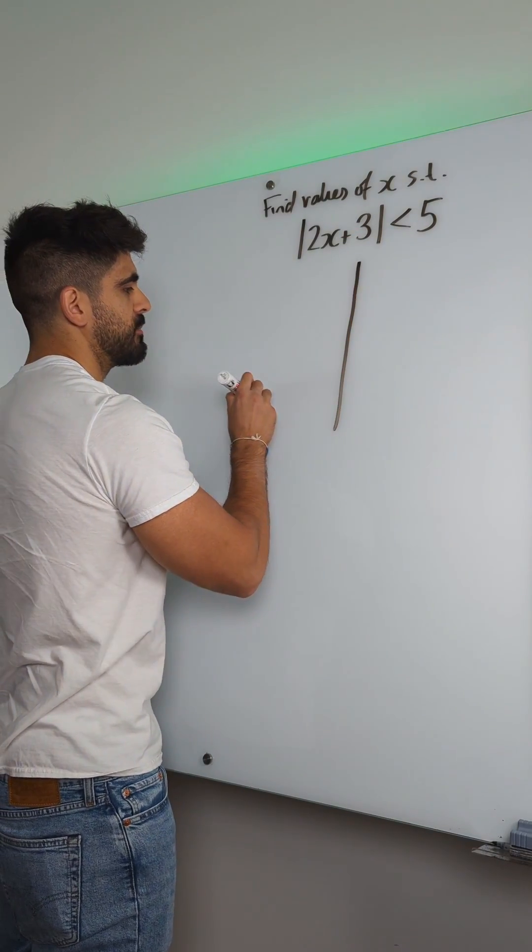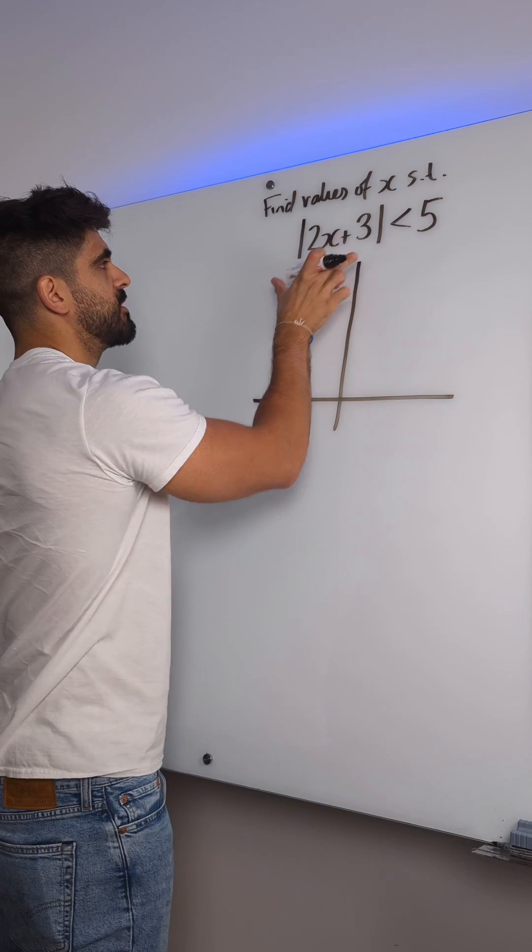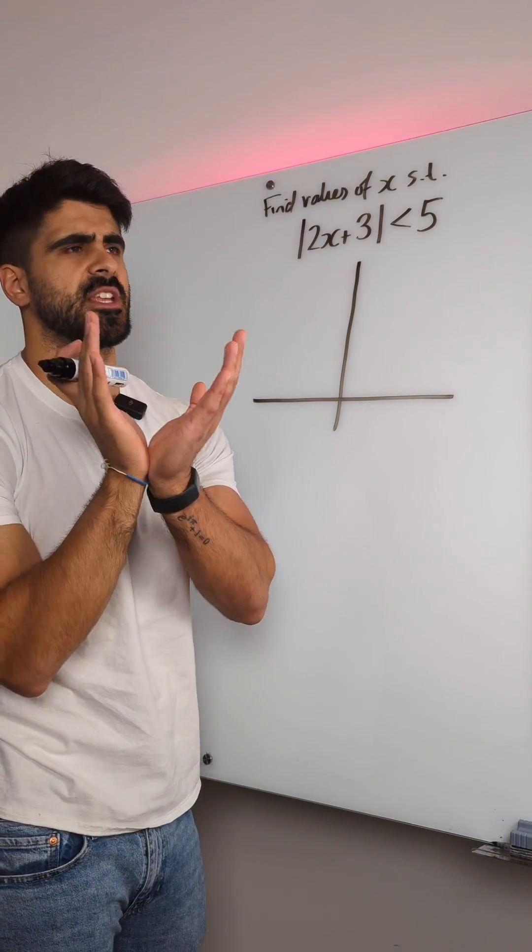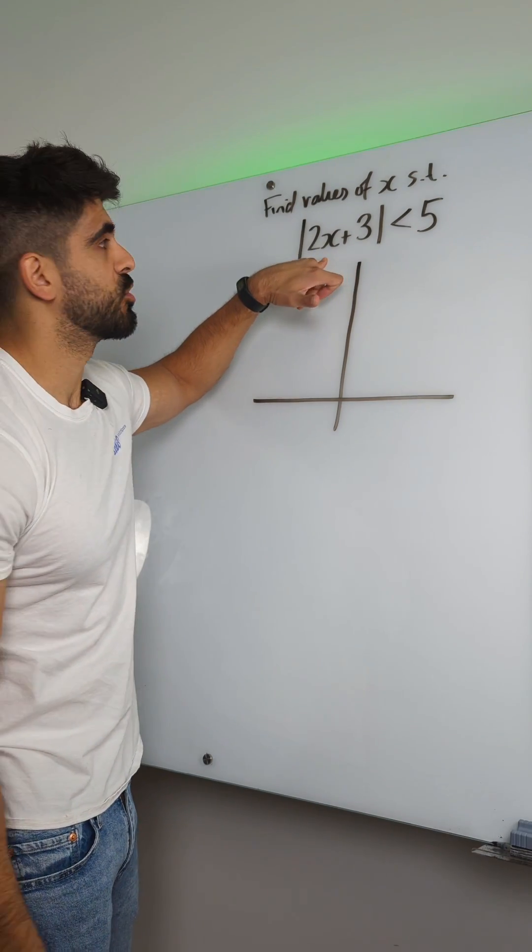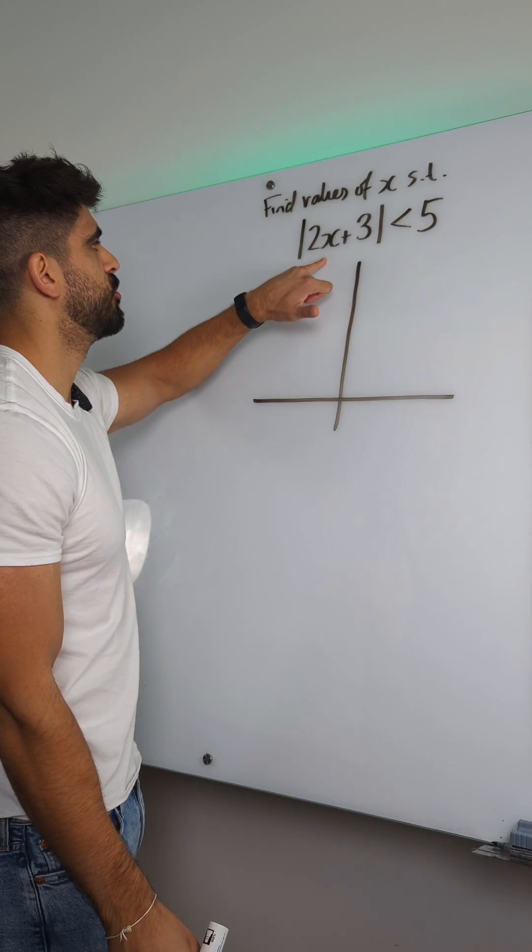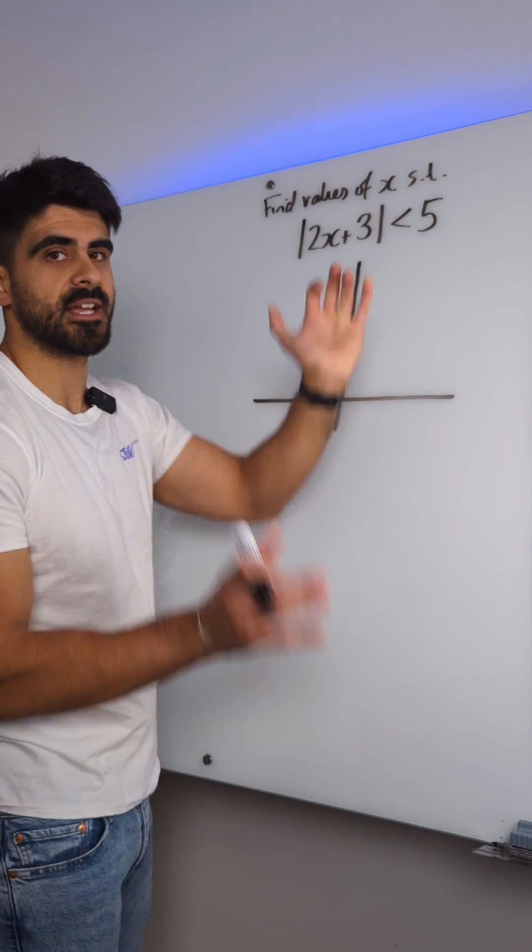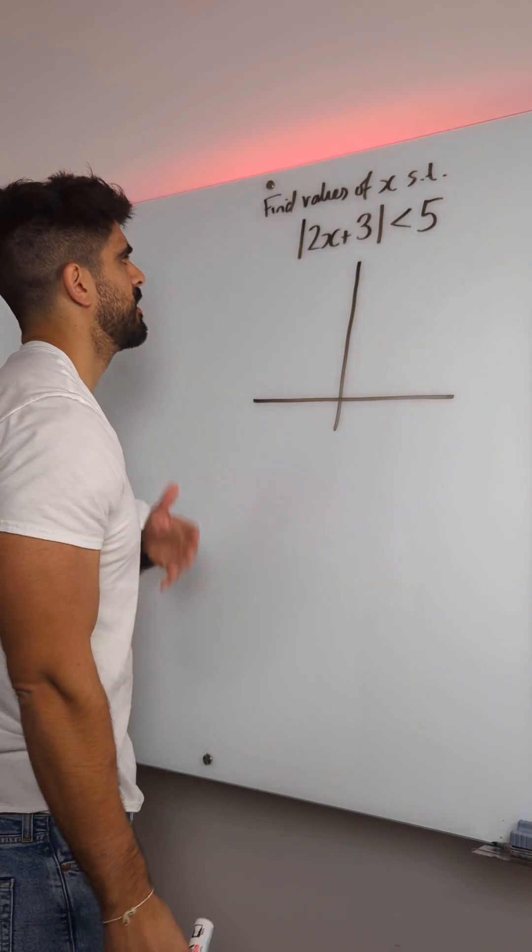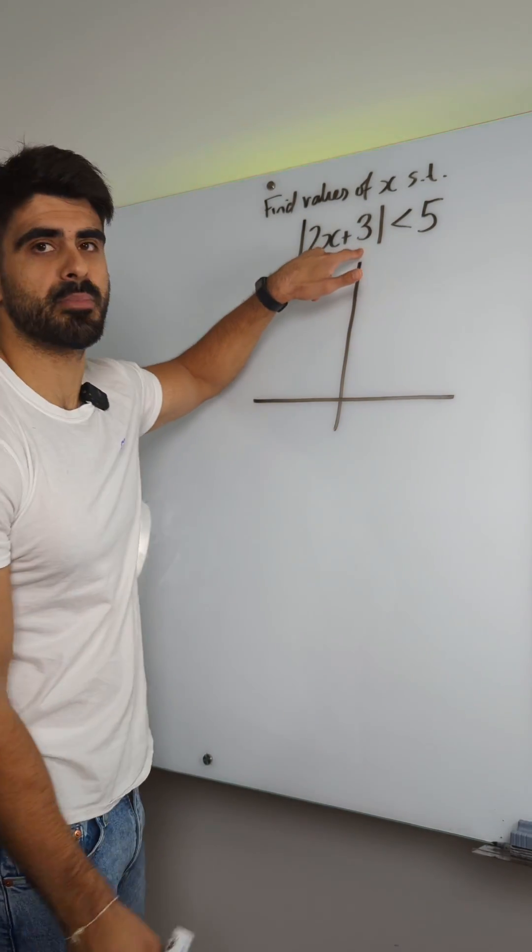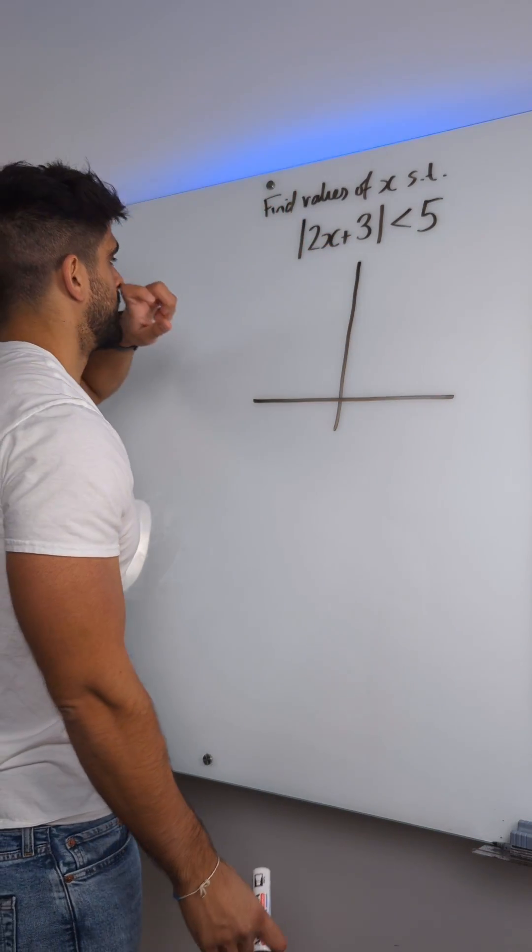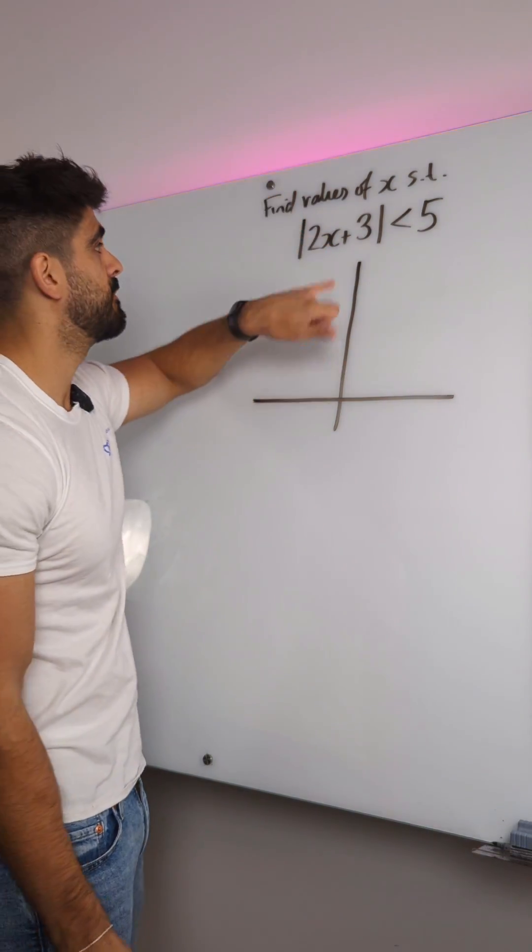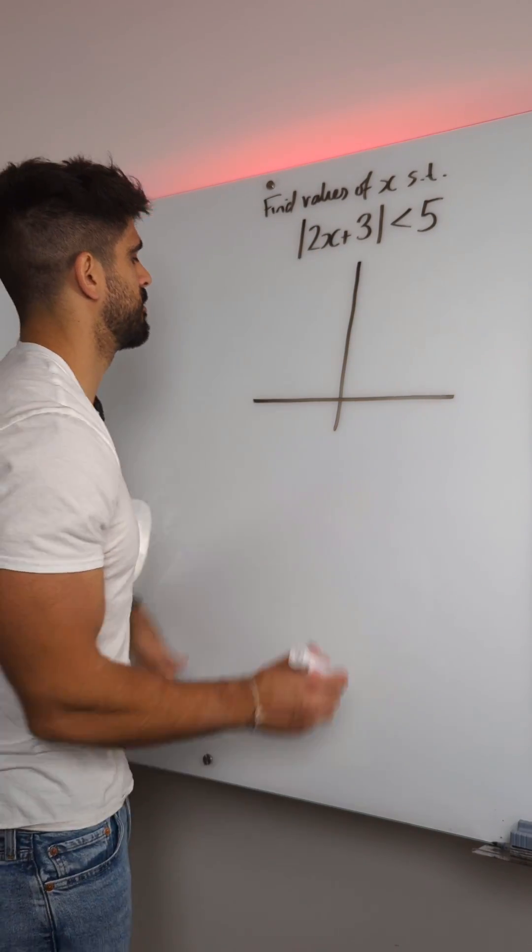Modulus functions have a v-shape. The way you draw these super quick is you just make this equal zero. That tells you where the vertex is. That's the same as completing the square with quadratics. What's inside the bracket tells you the x-value of where it has the turning point. When you make that equal zero, you get minus three over two.